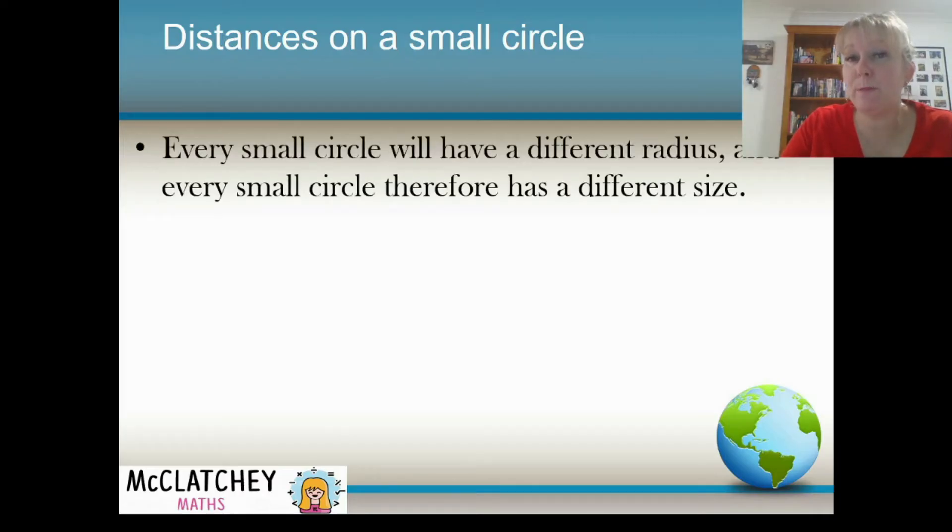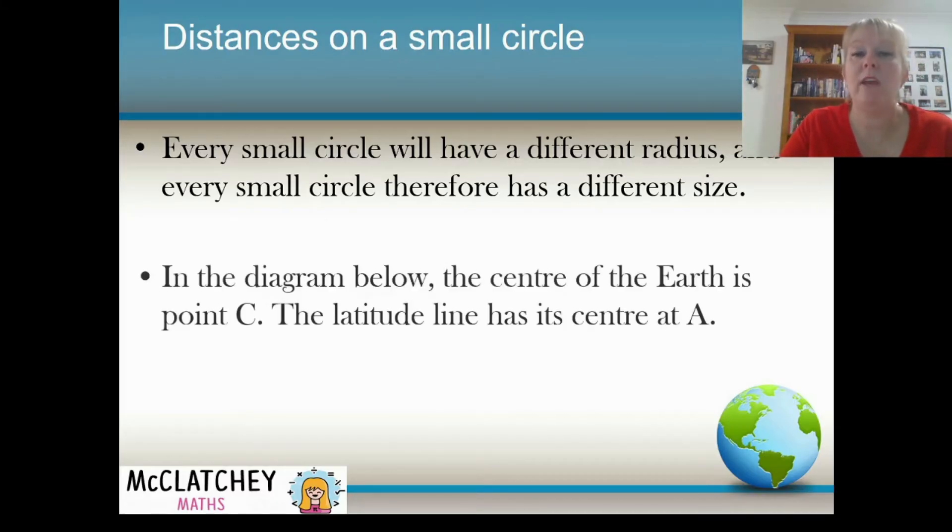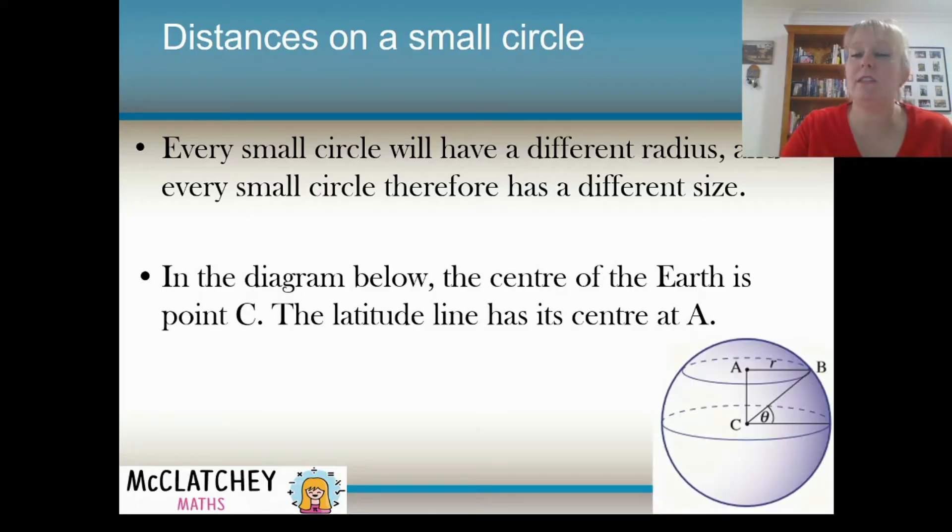So now let's talk about how we can find distances on a small circle. Now, because every one of those small circles has a different radius, therefore, it's going to have a different circumference. So you might be thinking to yourself, well, how do I know what the radius of the circumference is going to be? How do I work that out? Well, we actually find that out in relation to the radius of the earth. So let's have a look at this diagram here. And I'm just going to talk you through what this diagram means.